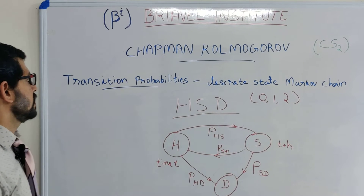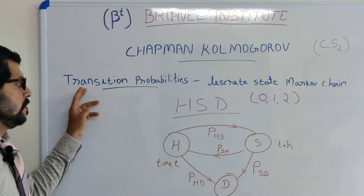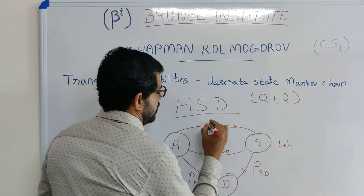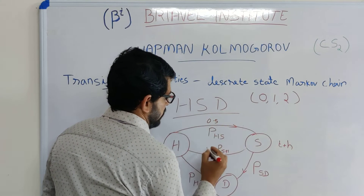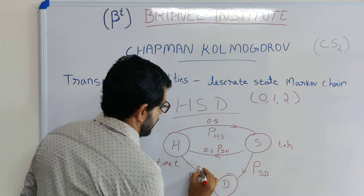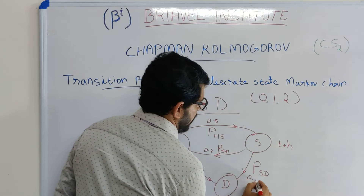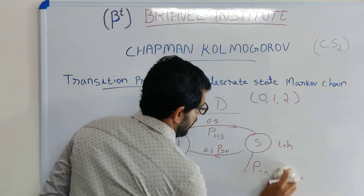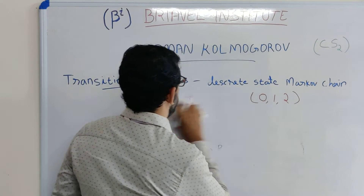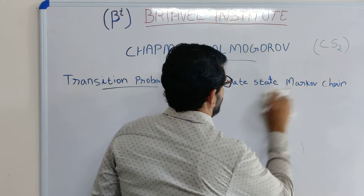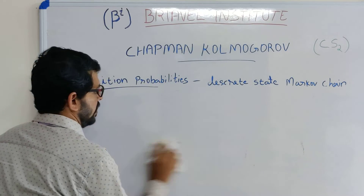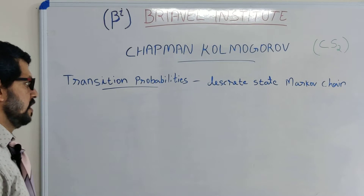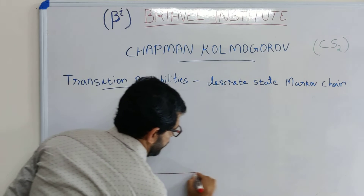This is the representation of transition probabilities. Some probabilities may be 0.5, 0.2, or 0.1, and so on. Now that we understand how to write transition probabilities, we are going to discuss the Chapman-Kolmogorov equation and how to represent it.